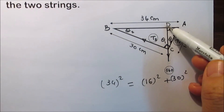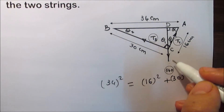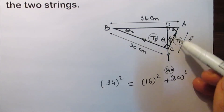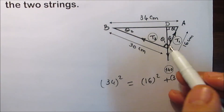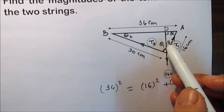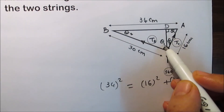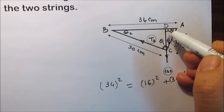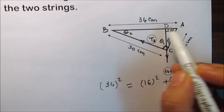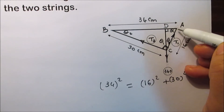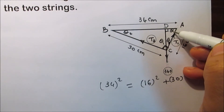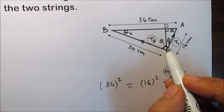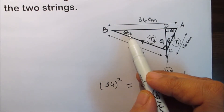Assume the angle between the vertical line through C (representing the weight) and T2 is θ₁, and the angle between the vertical line representing the weight and T1 is θ₂. Since C is a right angle, θ₁ plus θ₂ equals 90 degrees, so θ₁ and θ₂ are complementary. Since the weight is vertical and AB is horizontal, we also have a right angle there, so angle A equals θ₁ and angle B equals θ₂.